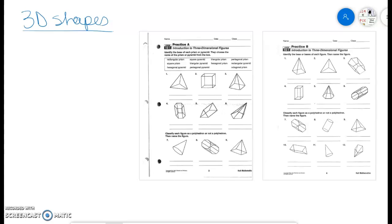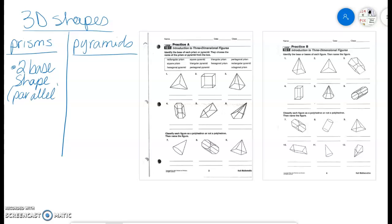So we can classify 3D shapes in two different ways. We can classify them as prisms, and we can classify them as pyramids. So prisms are going to have two base shapes. These base shapes are always, always, always parallel to each other.